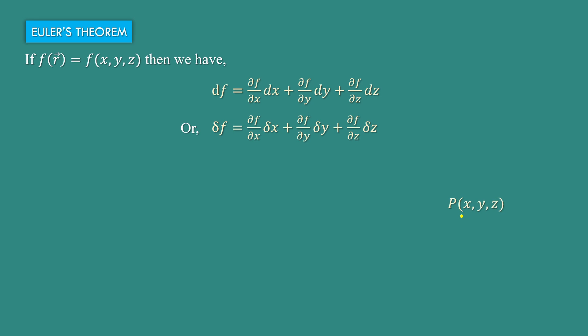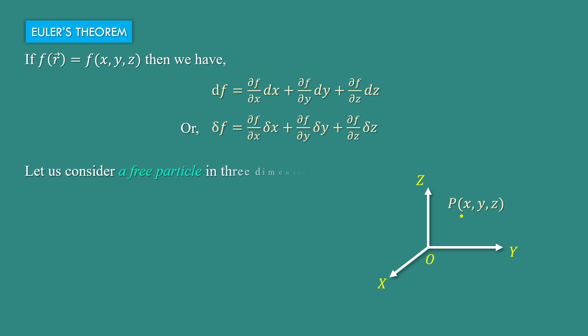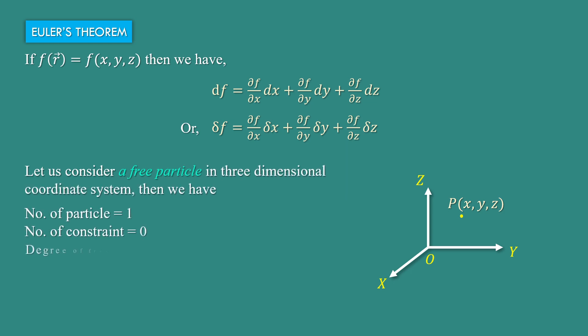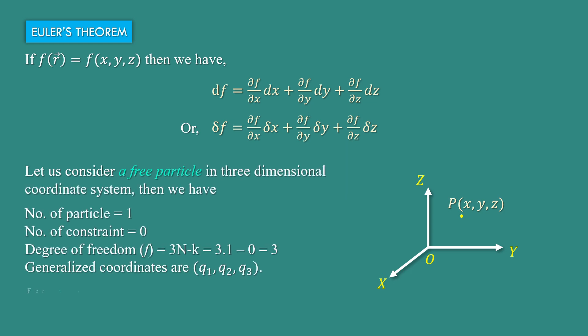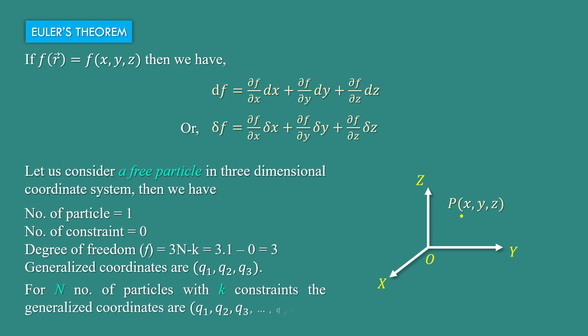Let us consider a free particle in a three-dimensional coordinate system. Then we have number of free particles is 1, number of constraints is 0, degree of freedom is 3, and the generalized coordinates are denoted by q1, q2, q3.